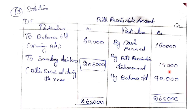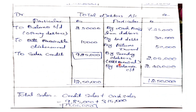Let's see the solution. In the debtors account, we have: opening balance 2,50,000, bills receivable received during the year, cash received from debtors 7,25,000, bad debts 30,000, returns inward 50,000, bills receivable 2,50,000, and closing balance 2,40,000.